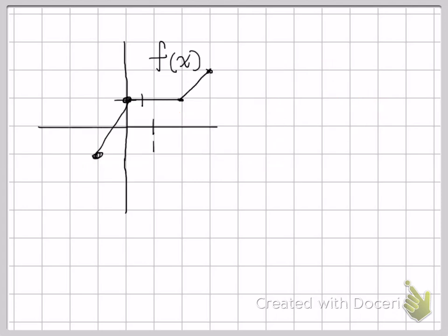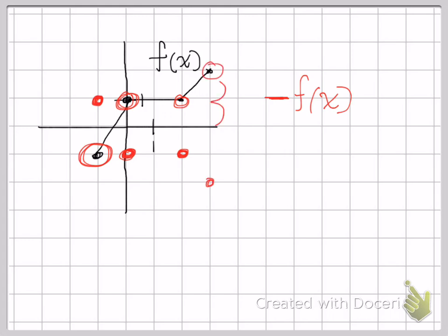Next I'm going to look at doing a reflection. Recall that f of x is like y, so if I do a negative of y, that's going to be an up-and-down reflection. I'm going to take each point — wherever a point is above the x-axis it's going to reflect down, and wherever it's below the x-axis it's going to reflect up. This last point is two above, so it's going to reflect two down, giving us negative f of x, a reflection through the x-axis.